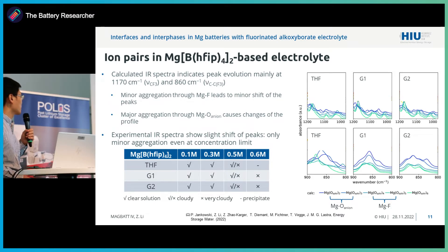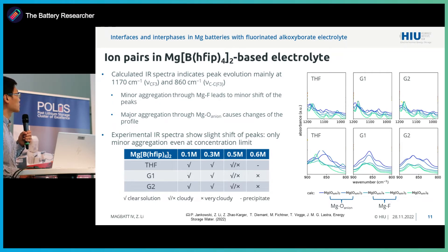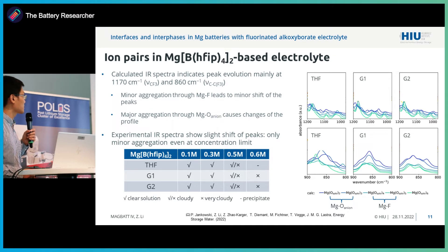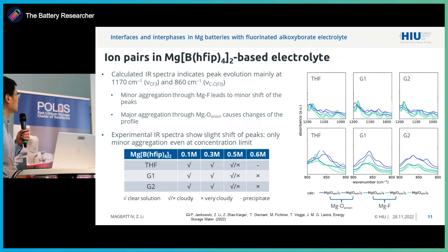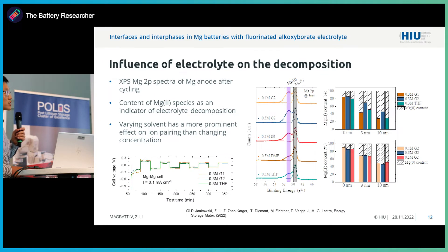We then performed experiments, preparing magnesium-borate electrolyte in different solvents and also with different concentrations up to the solubility limit of 0.5–0.6 molar. In the experimental data, we see only a minor shift of this peak across different electrolytes, consistent with the scenario where only magnesium-fluoride interaction occurs. We have experimentally confirmed that there is only minor aggregation even at 0.5–0.6 molar concentration, and we cannot reach the magnesium-oxygen interaction regime in solution.